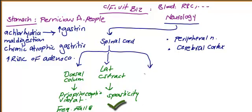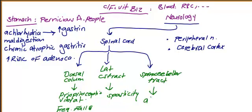The lateral corticospinal tract, if affected, leads to spasticity. The spinocerebellar tract, if affected, manifests as ataxia.